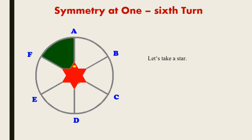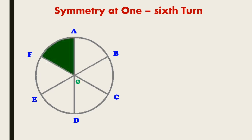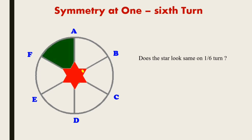Let's take a six-pointed star. I will make a yellow color point on it so when we rotate it, we will know whether the star looks the same or not. This star is at point A. Now rotate the star from point A up to point B. Does the star look the same on one by six turn? Yes, the star looks the same on one by six turn.